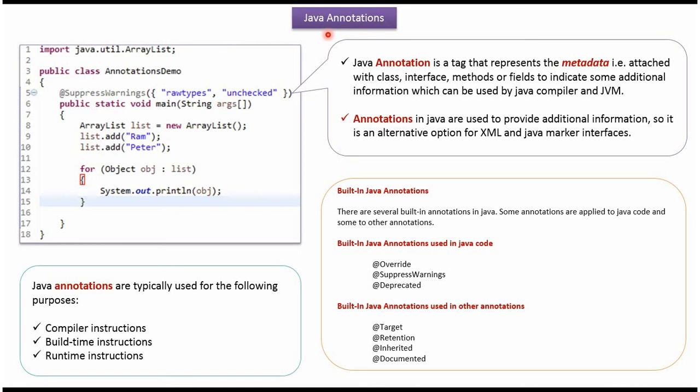Hi, in this video tutorial I will cover Java annotations. Here you can see @SuppressWarnings — this is one of the annotations. This informs the compiler that if any warnings occur within this main method, then just suppress that.